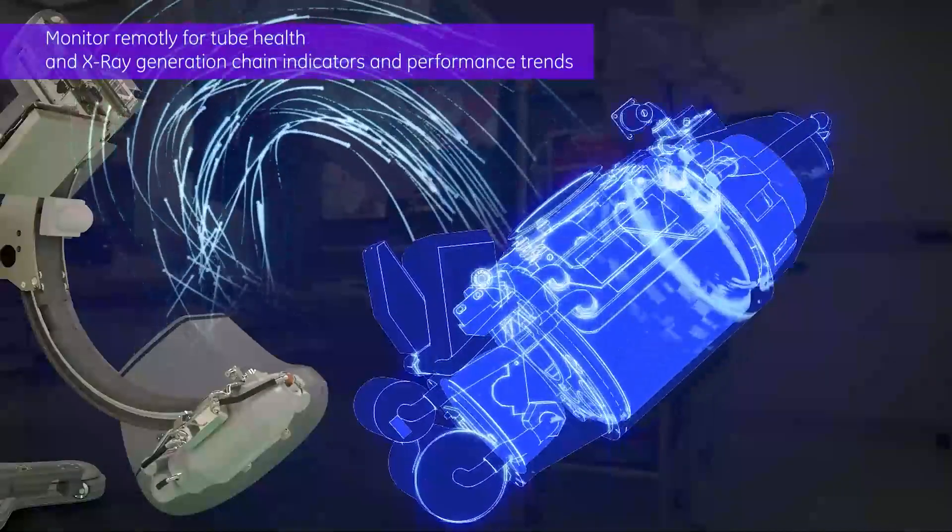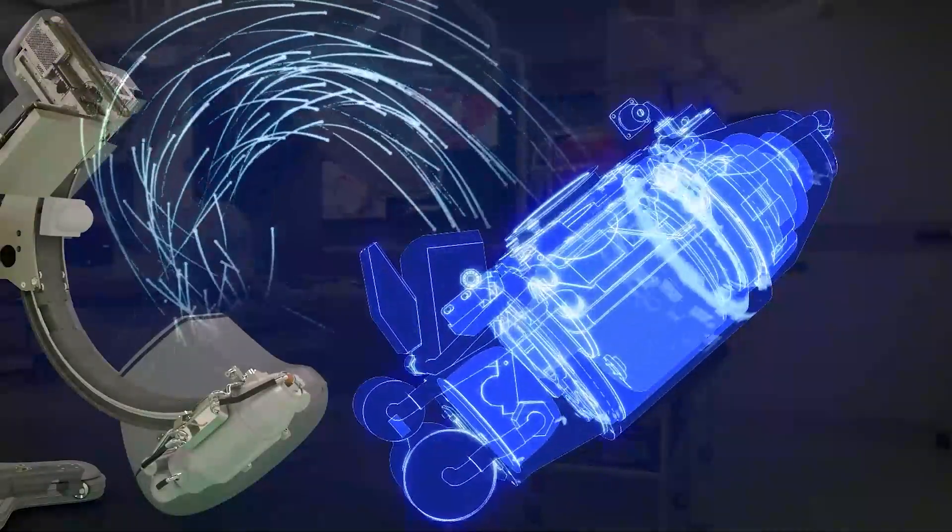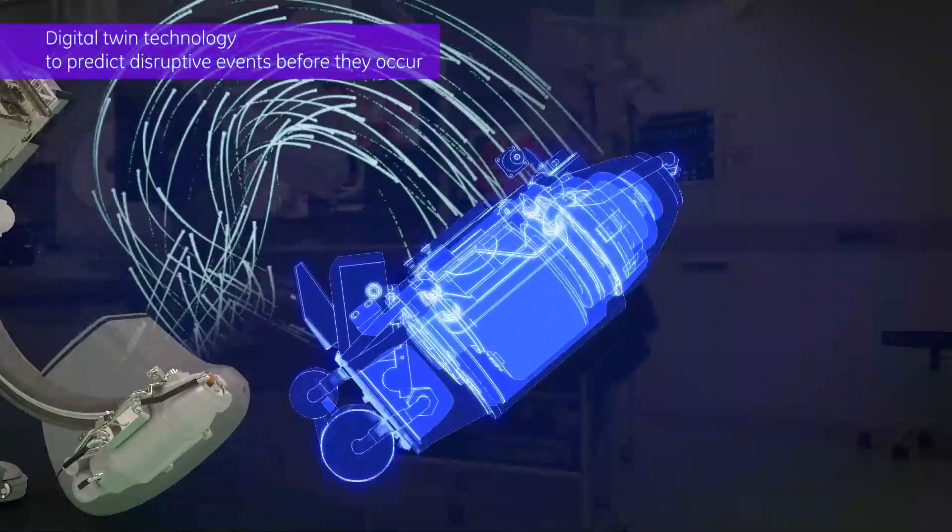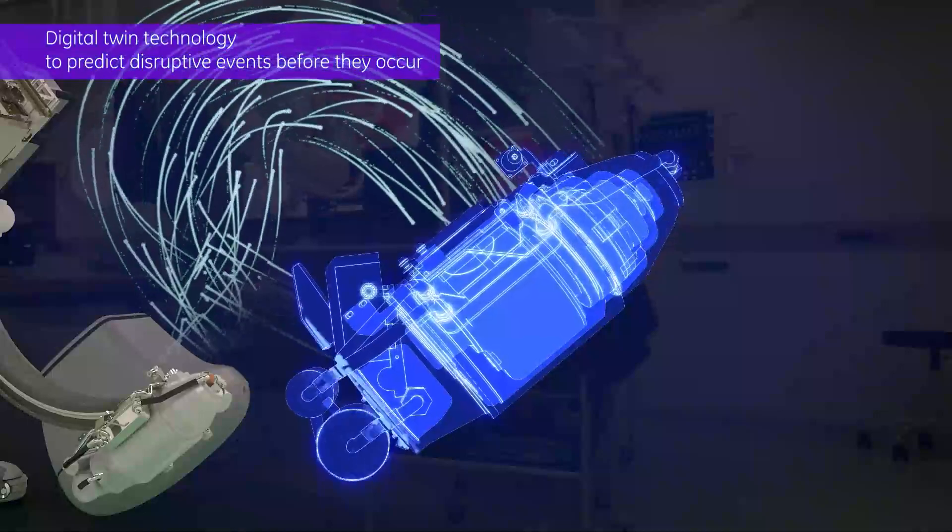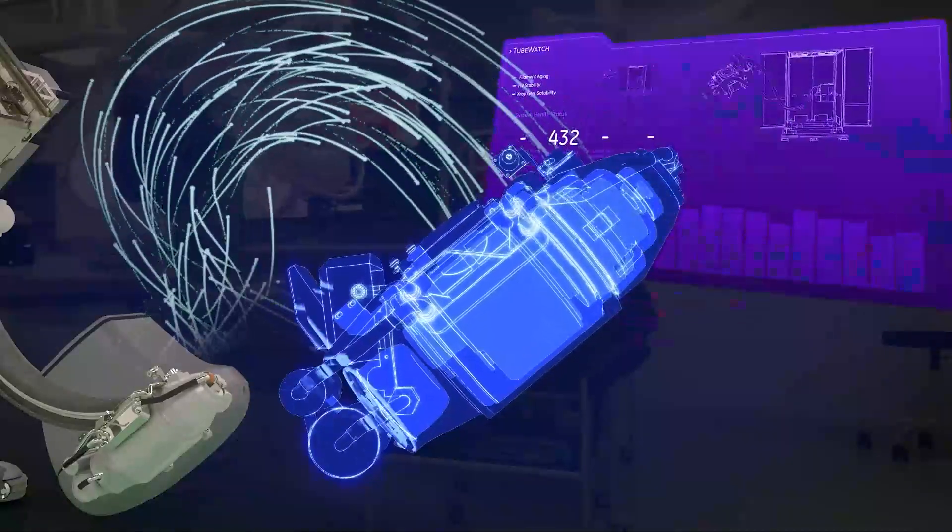TubeWatch for IGS is designed to leverage key health indicators of your x-ray generation chain and performance trends to create a digital twin model with a unique set of algorithms tailored to your system and utilization.